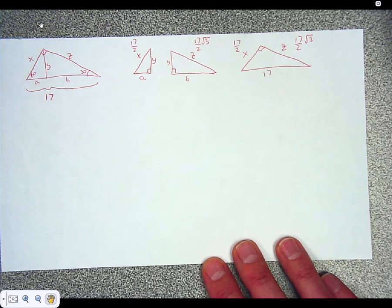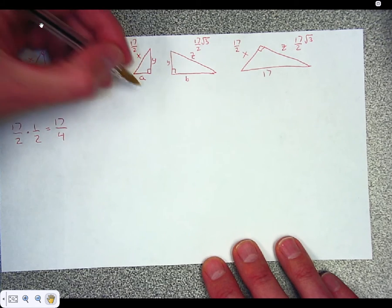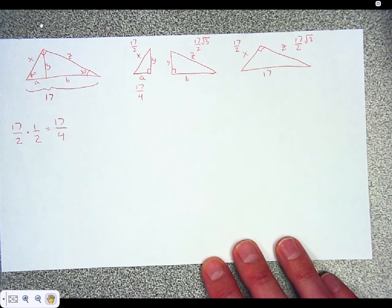The short leg is half of the long leg. And in case you forgot, if you want to take half of something, 17 halves times a half. Half of 17 halves. If you multiply fractions, 17 times 1 is 17. 2 times 2 is 4. Half of a half is a fourth. So half of 17 halves, 17 fourths.